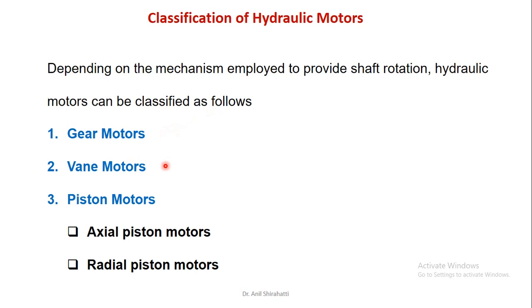The three types are: gear motors, vane motors, and piston motors. Within piston motors, there are two subtypes — axial piston and radial piston motors. Let's see them one by one.